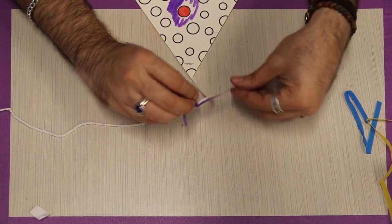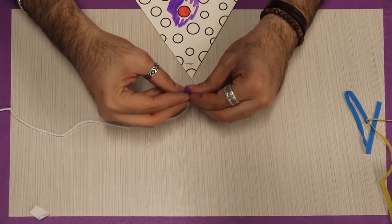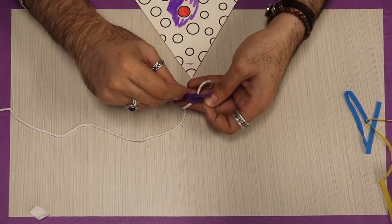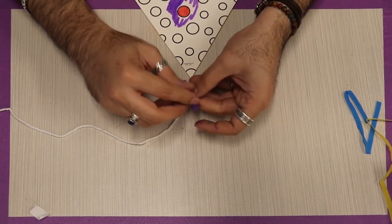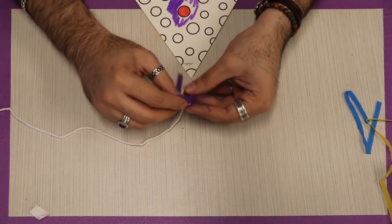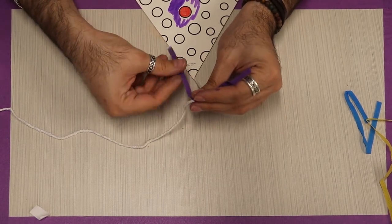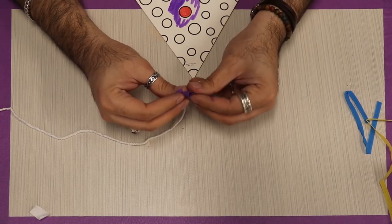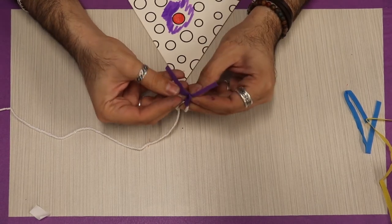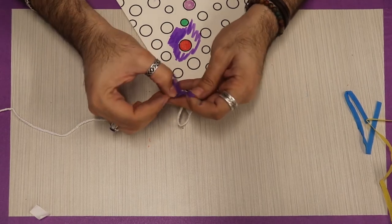You make a rabbit ear. You make another rabbit ear, and then it goes under, over, through, and pull it tight. Then you can sort of fix your little bow. Or if it's easier for you, or if you know a better way, there's plenty of other ways to do this. So you make your little bunny ears and just put them together like so, and there is my little bow.